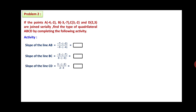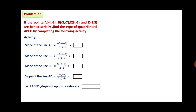Slope of line CD equals (3 minus (-2)) divided by (2 minus 3) — write the answer. Slope of line AD equals (3 minus (-2)) divided by (2 minus (-4)) — write that in the box. Then state what the slopes of the opposite sides are, and therefore what type of quadrilateral ABCD is.